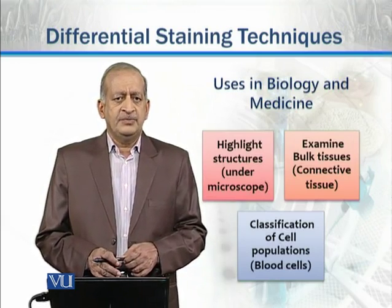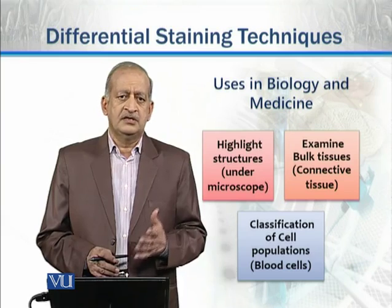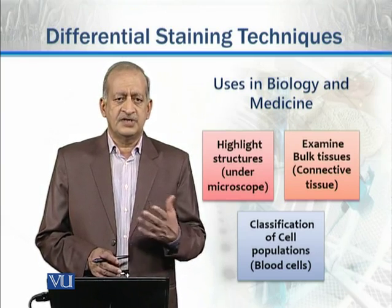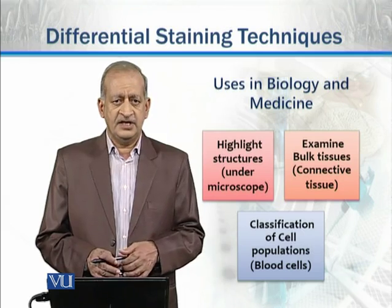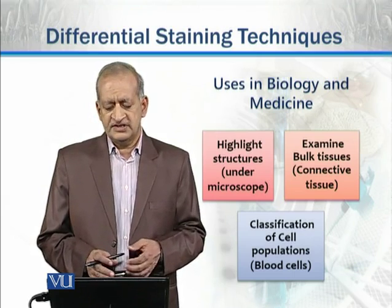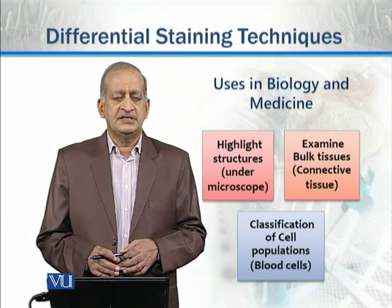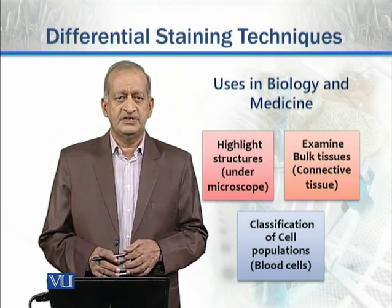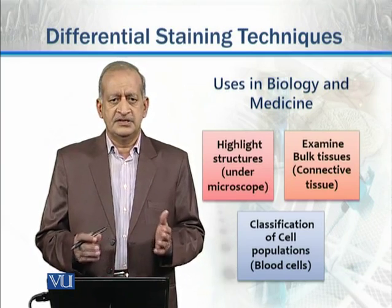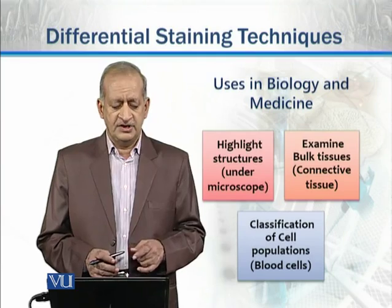In biology and medicine, what are the uses? We can highlight structures through staining. We have different tissues in different cells — we can examine and study them. If we want to study the cells of different populations, we can study them. For example, if we have different cells like red blood cells, white blood cells, and platelets, we can see and study them.